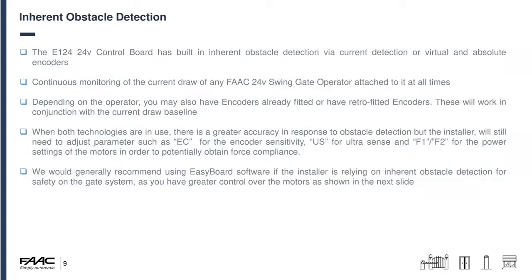The E124 board has built-in inherent obstacle detection via current monitoring or virtual and absolute encoders. Please note that until you're testing with a force testing device we can't guarantee this will give you adequate safety — until you actually test it you may still need to fit additional safety devices such as safety edges or laser curtains. We are continuously monitoring the current draw of any FAAC 24V swing gate operator attached to the board at all times.